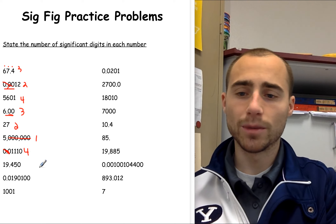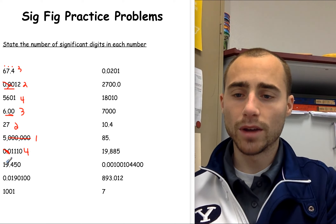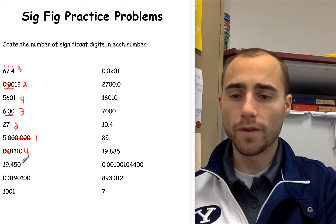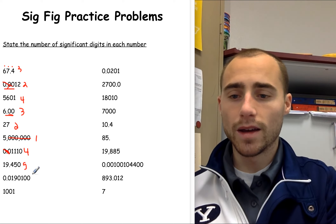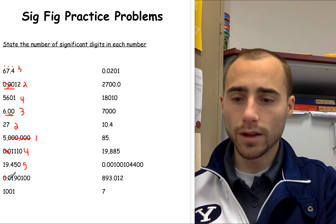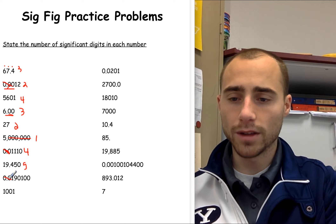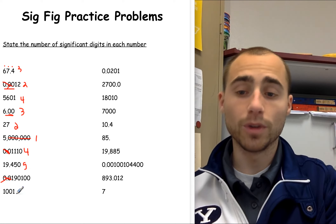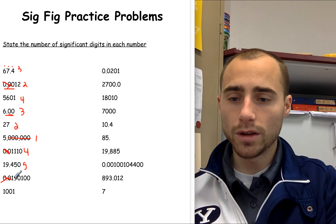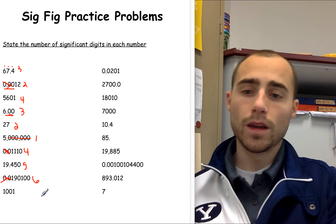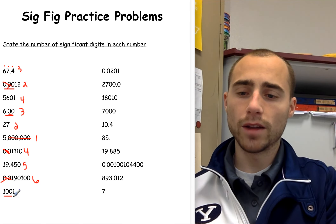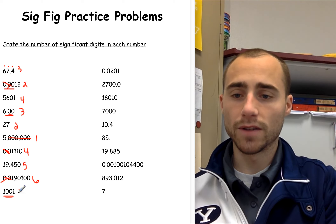For 0.1110, the rule for decimals: we don't count the leading zeros, so we wouldn't count the leading zero, but we still count the trailing zeros since it has a decimal — so it has four significant figures. Another one with a decimal has five significant figures, because the only thing we don't count with a decimal is the leading zero. Another decimal — cross the leading zeros off automatically — this one has six significant figures. No decimal, but also no trailing zeros, so this one has four significant figures.